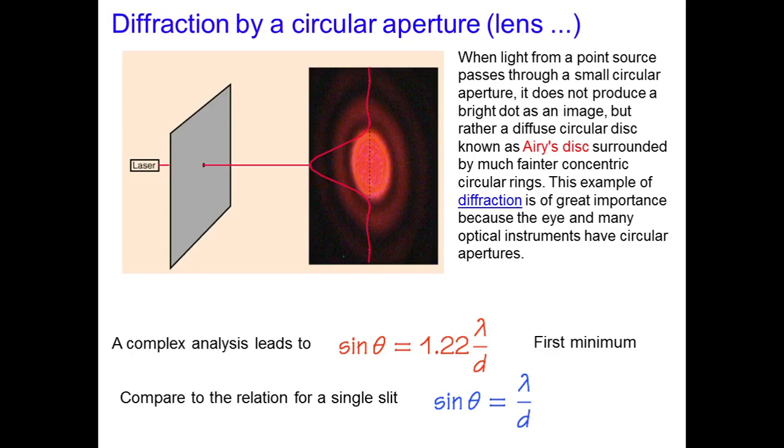Now let us understand diffraction by circular aperture or lens. When light from a point source passes through a small circular aperture, it does not produce a bright dot as an image but rather diffuses to a circular disc known as Airy's disc. And this disc is surrounded by much fainter concentric circular rings. This example of diffraction is of great importance because the eye and many optical instruments have circular apertures.